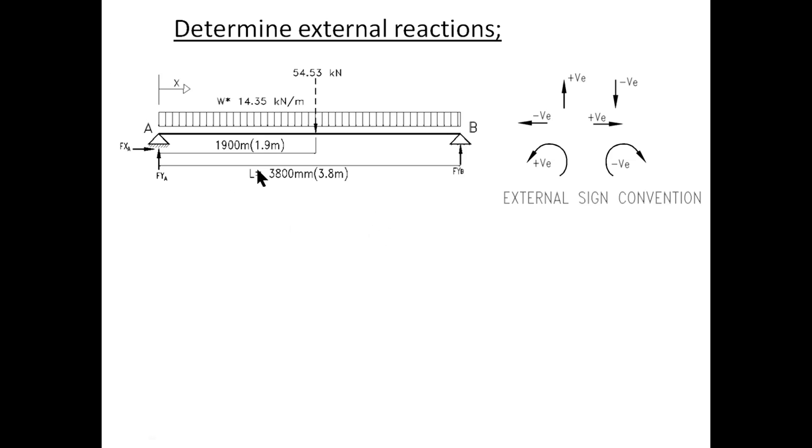Let's now work out the reactions. I will take sum of moments at A equals zero so that will be minus 54.53 which is going down and that's why it's negative multiplied by 1.9 the lever arm is 1.9 plus FyB and FyB is positive that's going up multiplied by the lever arm of 3.8.